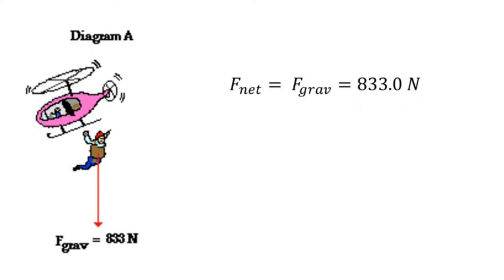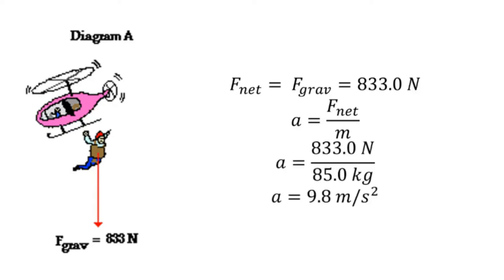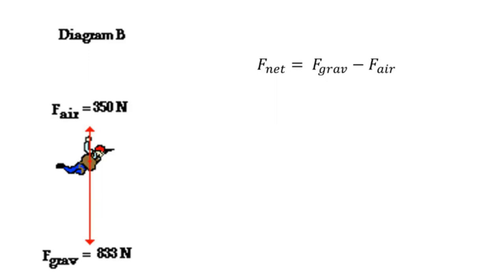We have net force equals 833 newtons. To find the acceleration, we will use the Second Law of motion, so we write: a equals net force over m. Substituting our given values, we get acceleration as 9.8 meters per square second. For diagram B, given an air resistance, we need to form an equation to find the net force.